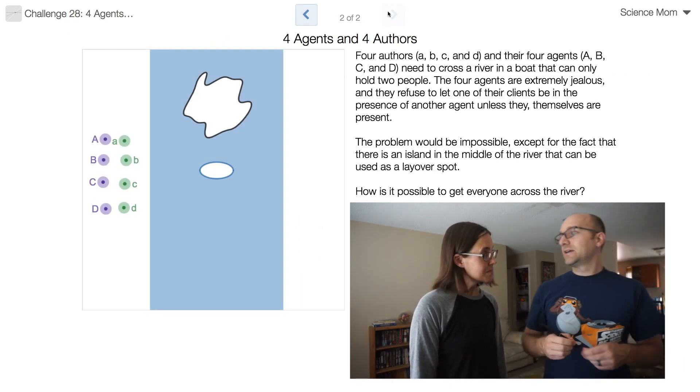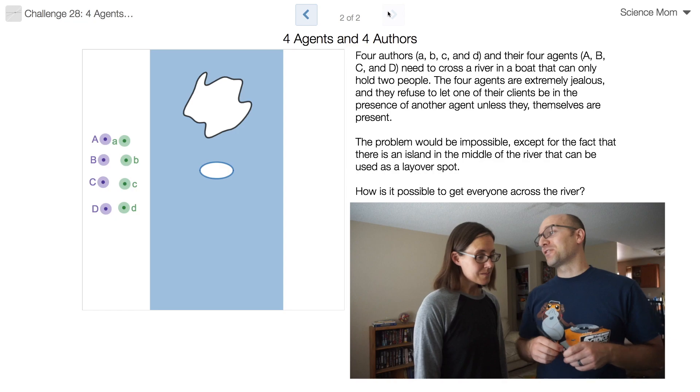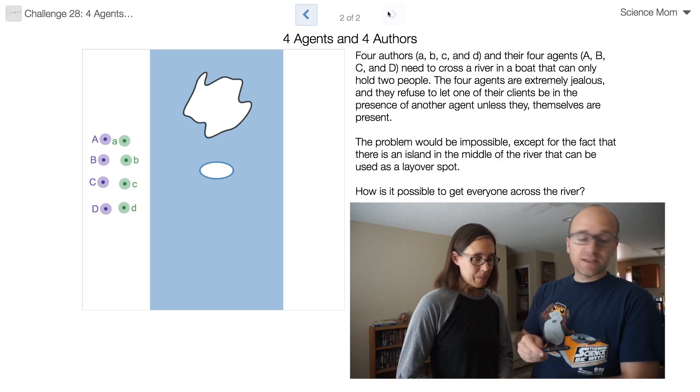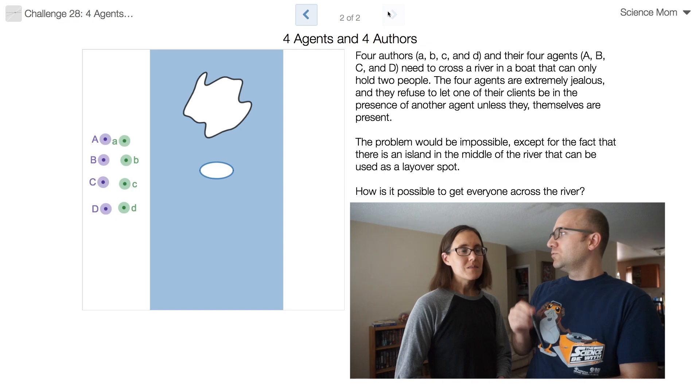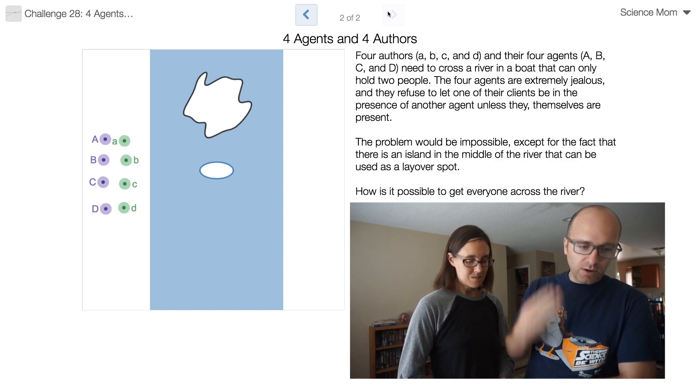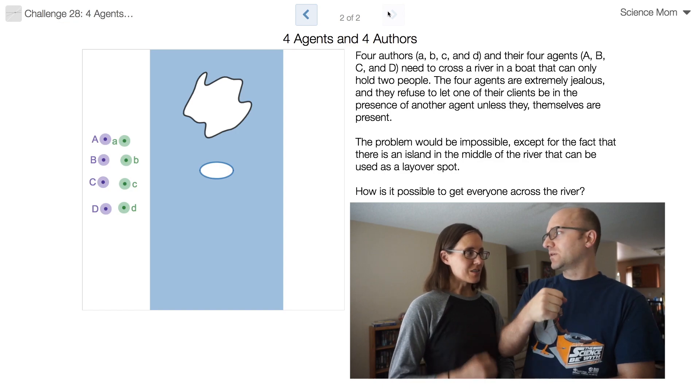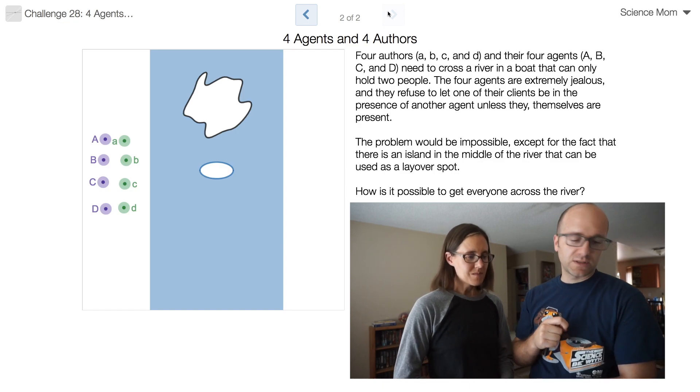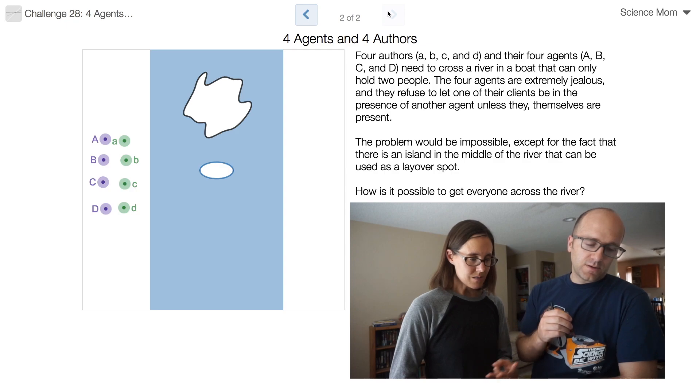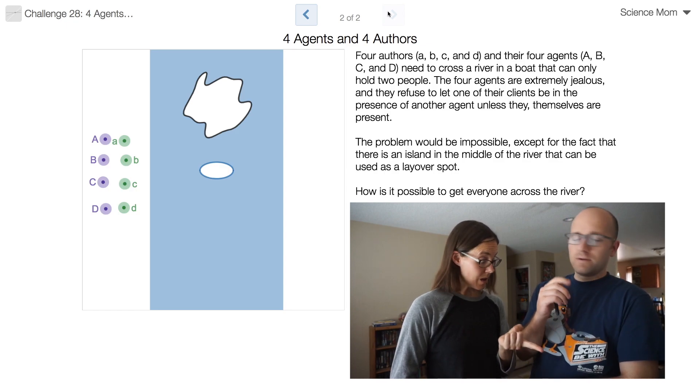In this case there are four authors and four agents. Once again we have jealous agents who refuse to let their client be in the presence of another author without they themselves being present. Okay, so last time we had three and we crossed them over. This time we have an island.